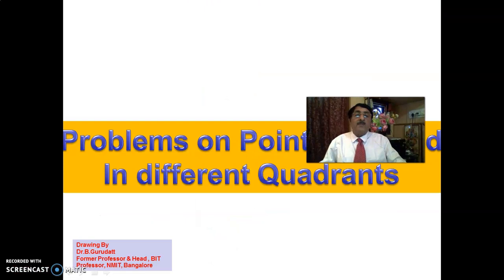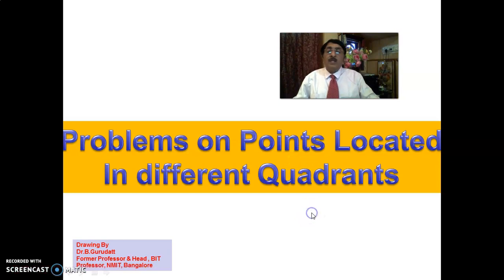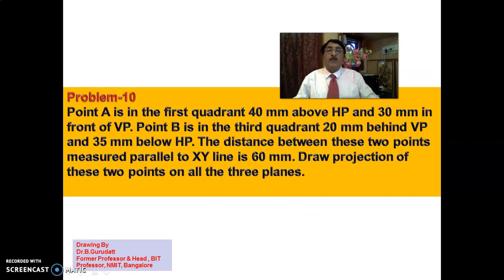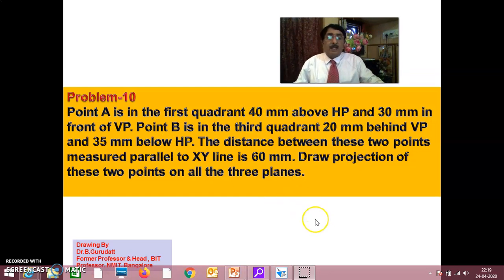Now, problems of points located in different quadrants — listen carefully. The problems involving your concepts will be tested here. See the first problem: Point A is in the first quadrant, 40mm above HP and 30mm in front of VP. We will see the other things later on.